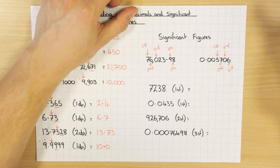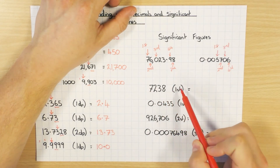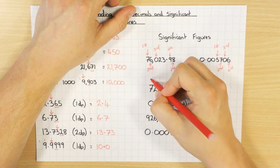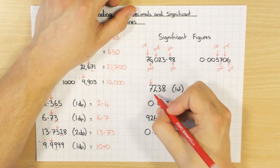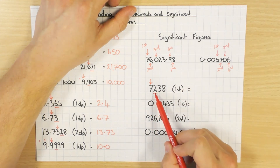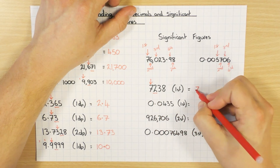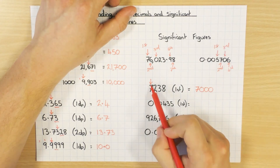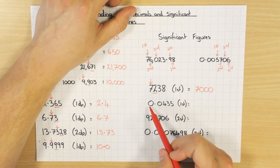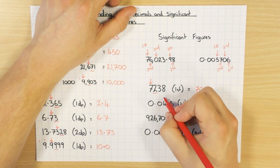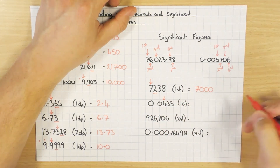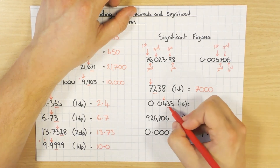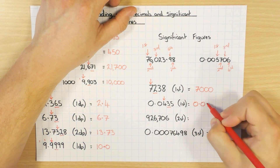Rounding to significant figures uses the same rounding rules. For 7,238 to 1 significant figure: the first non-zero digit is seven. The next digit is two, so I round down — seven stays the same. Since there are three digits after it, I add three zeros, giving 7,000. For 0.043 to 1 significant figure: the zero and the other zero don't count; four is the first significant figure. The next digit is three, so I round down — answer is 0.04.